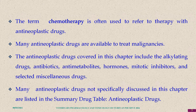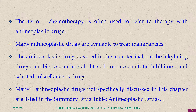The antineoplastic drugs covered include alkylating drugs, antibiotics, antimetabolites, hormones, mitotic inhibitors, and selected miscellaneous drugs. Many antineoplastic drugs not specifically discussed are listed in a table. In case of dogs, some tumors are treated with antineoplastic drugs, but their use is restricted. In large animals, they are not used at all because of cost and toxicity.